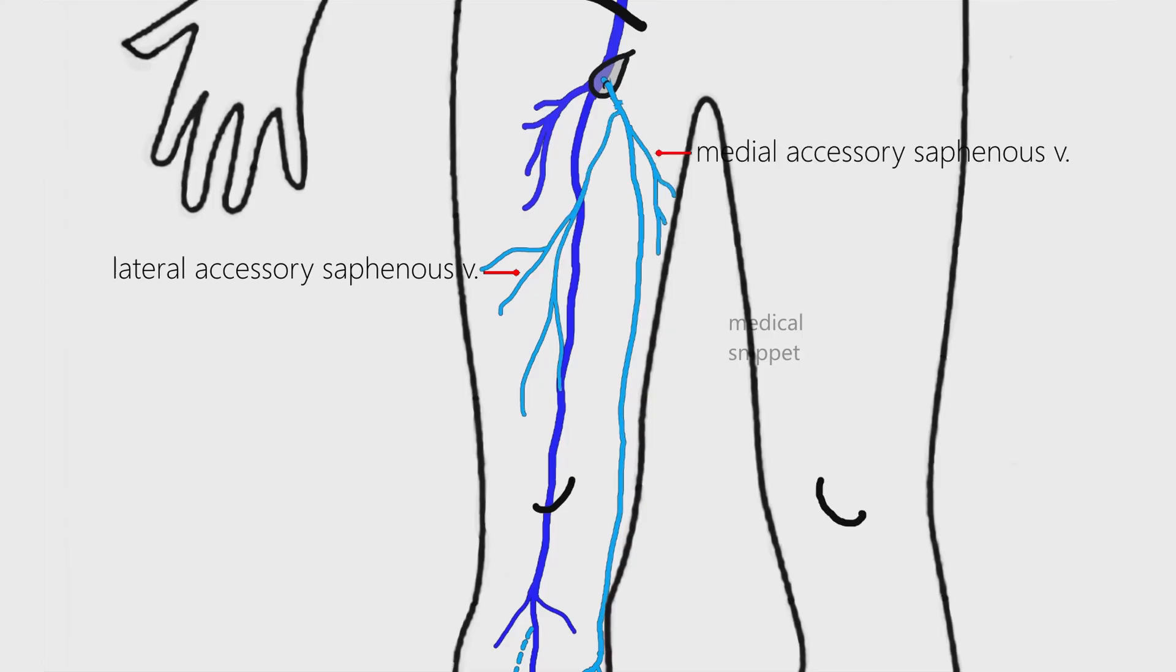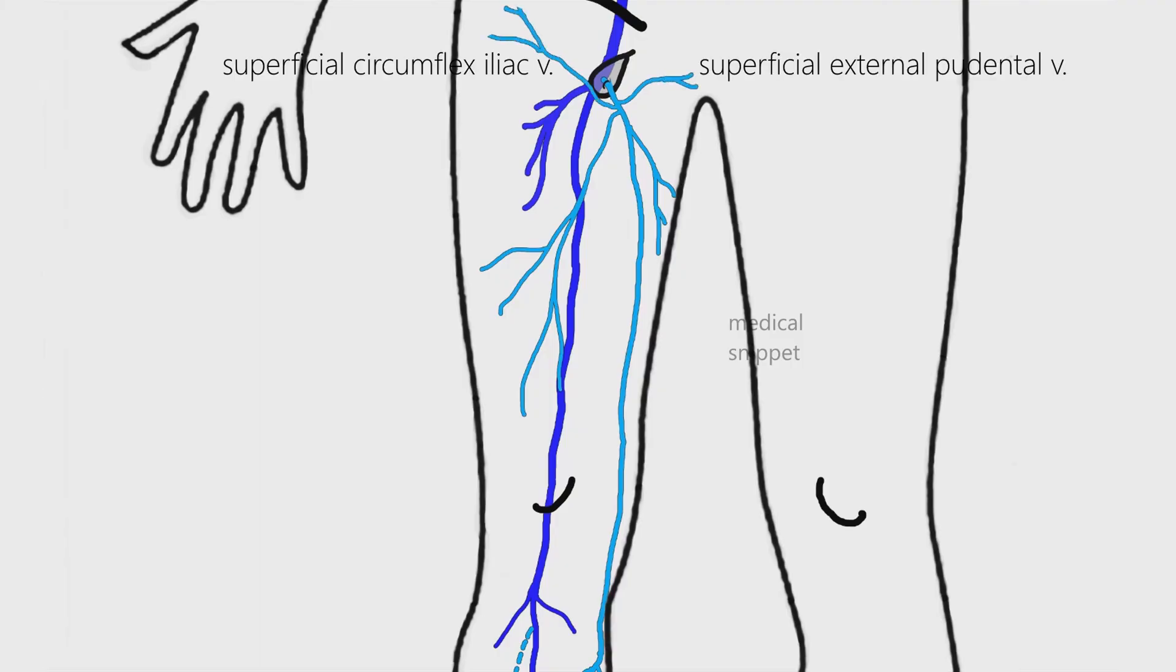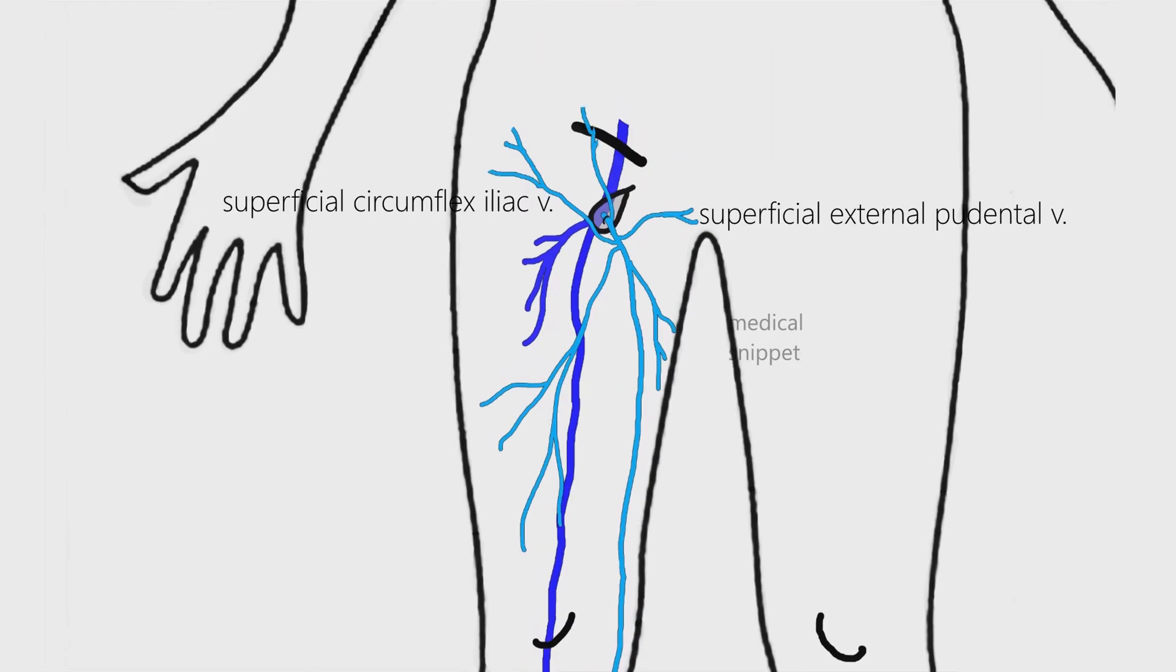The lateral accessory saphenous vein is almost always present. In addition, it also receives small tributaries like superficial external pudendal vein, superficial circumflex iliac vein, and superficial epigastric vein.